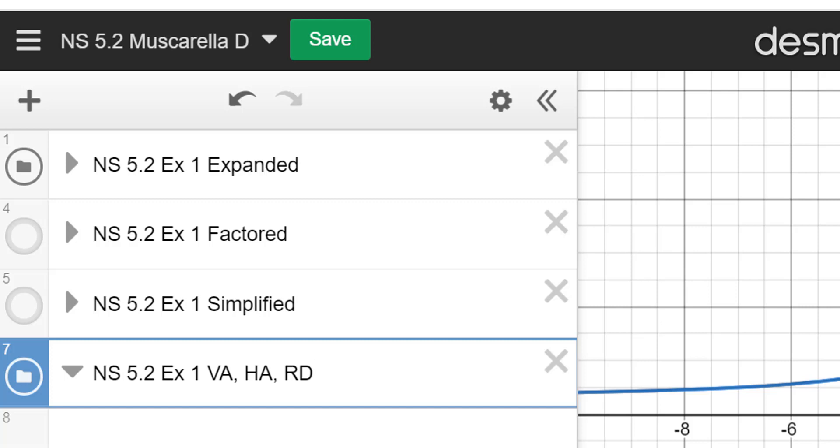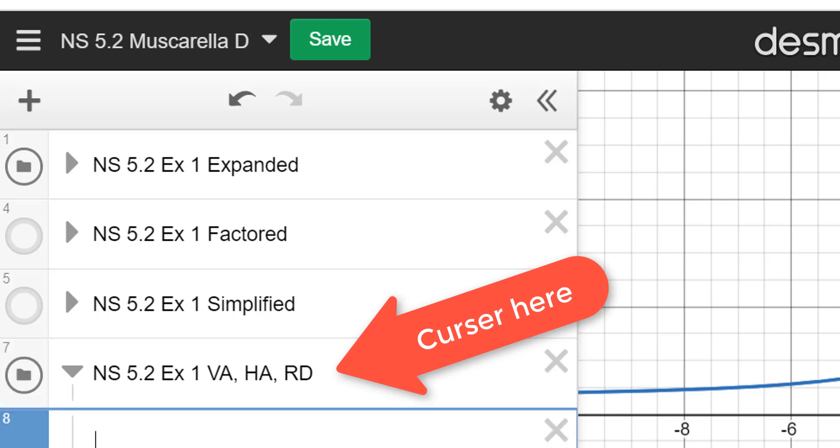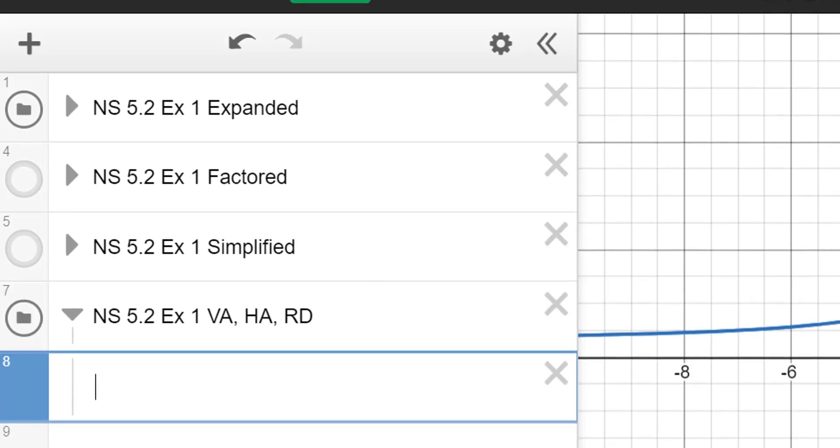The very last folder that says NS 5.2, example one, V-A-H-A-R-D, that folder, notice that arrow is pointed down. So when you go to add items to a folder, you want to make sure that that arrow is pointed down. And then also the cursor is at the end of that line. And that way, when you hit enter, you'll see a line directly underneath that inverted triangle. That means the item you're about to type in is going to be in that folder.